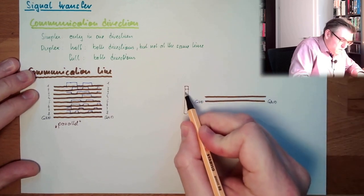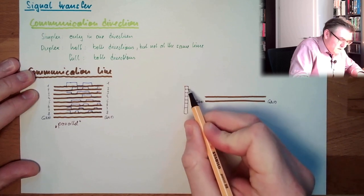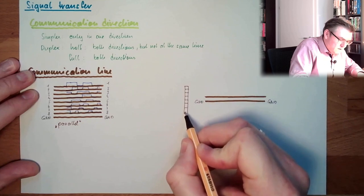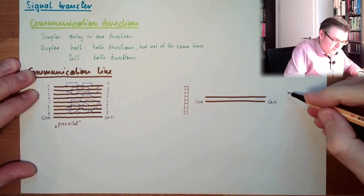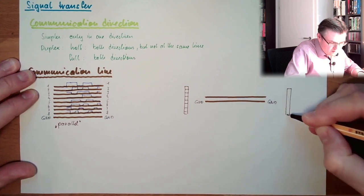And here, if I want to transfer a full byte, here's the byte. One, two, three, four, five, six, seven, eight. Here is the byte and here this has to go in. Here I wanted to have it in here.